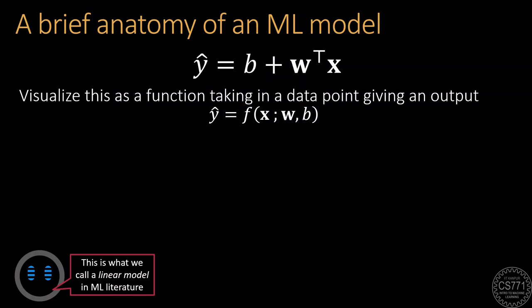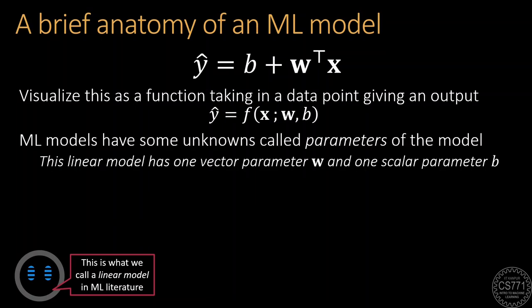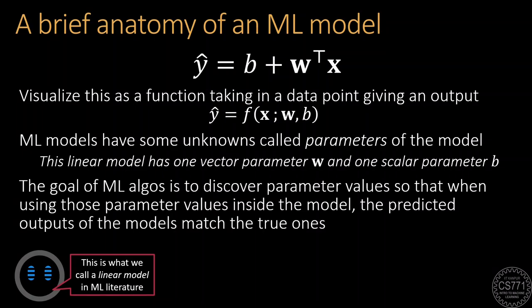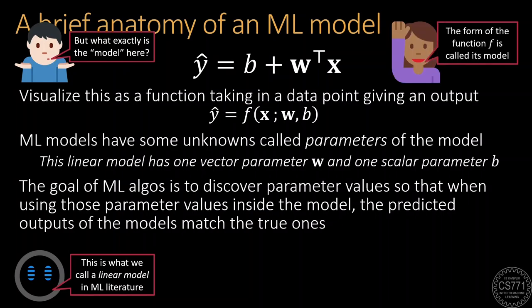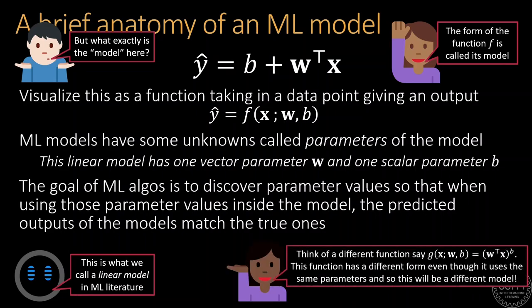More importantly, notice that this function is not completely defined by the input X alone. It has all these other values sitting inside it like the vector W and the real number B which are equally essential to compute the output of this function. These unknown values which are not the input to the function are present in every machine learning model and are called the parameters of the model. This linear model in our case has two parameters the vector W and the scalar B. The goal of machine learning algorithms in general is to discover parameter values which if used inside the model are able to make predictions that closely match the true outputs. In case you are wondering what do we mean when we use the term model this is just a way of referring to the form of the function. Note that we could have just as well created other functions which look very different but which use the same set of parameters. For example, instead of adding B to W transpose X we could have raised W transpose X to the power B. This would be a very different model but which uses the same set of parameters.